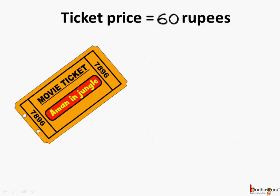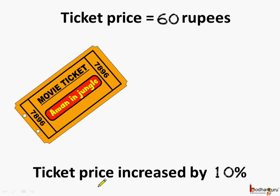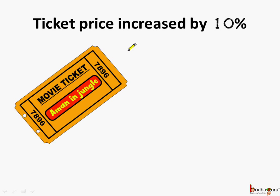Let us see another example. Suppose the movie ticket price was 60 rupees initially. Later the ticket price increased by 10%. So first let us find the increase in ticket price and the new ticket price. The ticket price got increased by 10%. Let us find 10% of 60, which was the price initially.